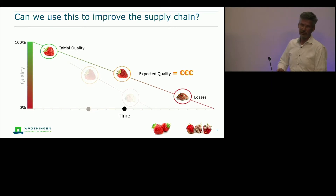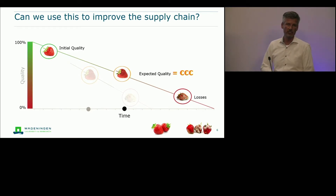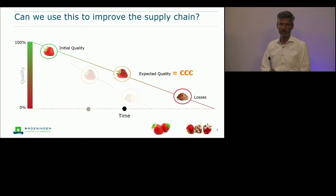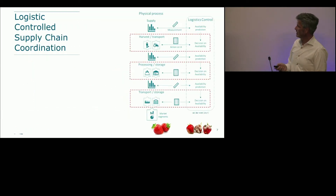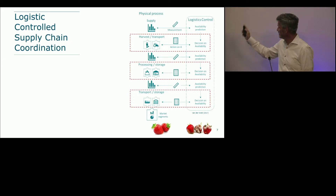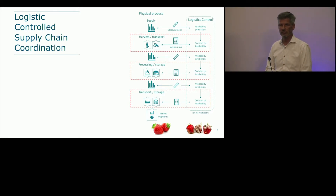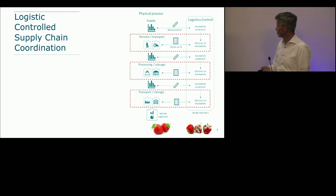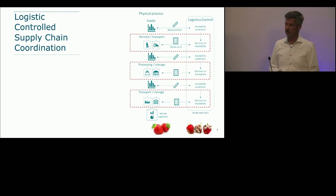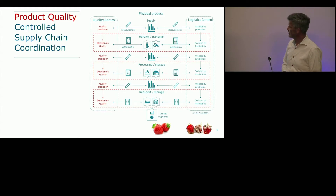All players in the fresh fruits and vegetables supply chain are also doing this — anticipating the downward slope in quality and preventing it from going below an acceptable level using cooling and other techniques. However, what we do in logistics most of the time is control based on availability prediction. We anticipate a certain availability and make decisions on where and how to store, without really looking at the product quality itself.